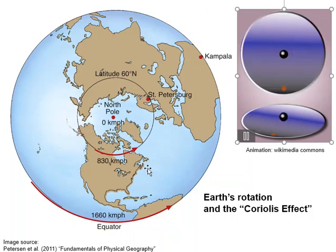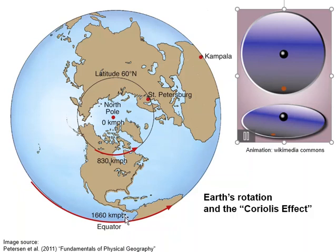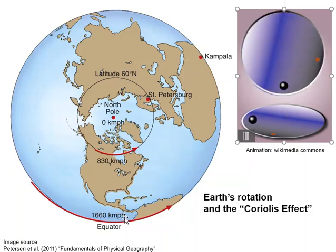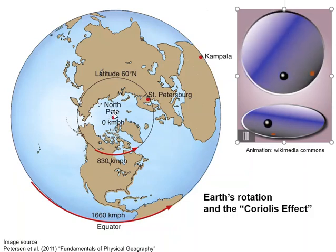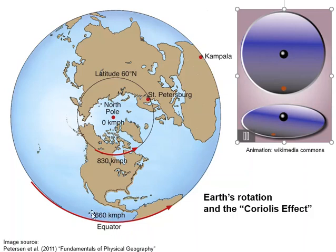If we transfer that idea onto our top-down view of the Earth: at the equator, the Earth is spinning at a rate of 1,660 kilometres per hour — that's how fast something on the equator would need to be moving to complete one full daily rotation. At the north pole, because it's just a point, it's spinning on the spot and isn't actually moving anywhere. So as we move from the equator towards the pole, the speed at which any point on the surface is moving gets lower and lower.